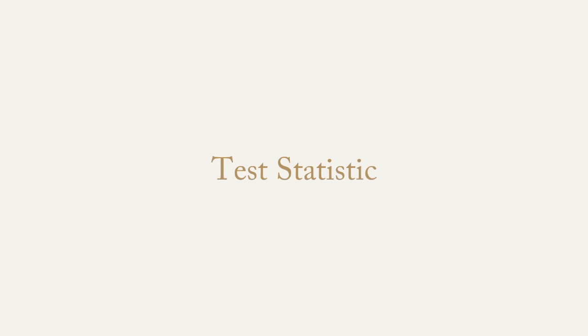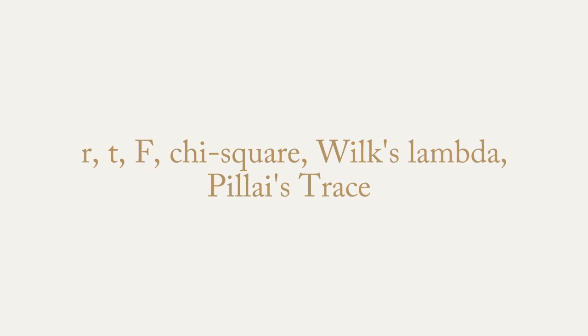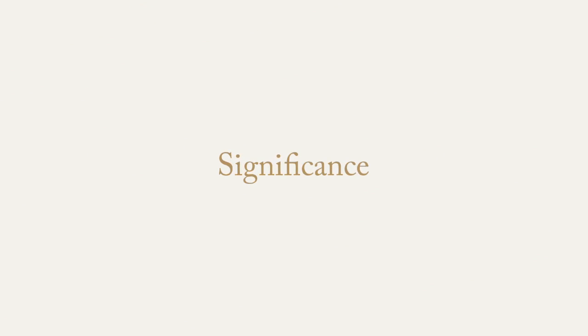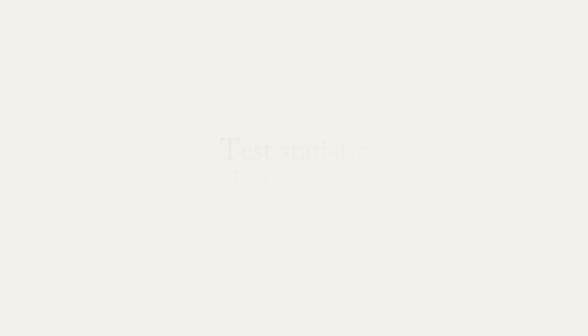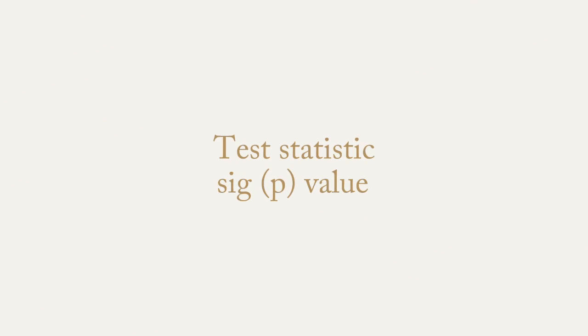Every statistical test is going to have something called a test statistic. The actual value presented with the test statistic often doesn't make a lot of sense to new statistics students, but it doesn't really need to for most new students either. Just know that if you are getting a significance value, that significance value is a test of the test statistic. For example, since this F value is significant, the thing that is significant is the F value itself. The test statistic and the significance or P value are almost always presented right next to one another.